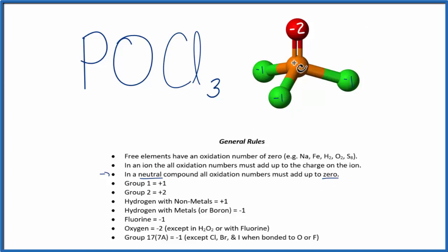So I have a minus two, minus three, minus four, minus five. So a minus five plus some number, and that number is the oxidation number on the phosphorus, that'll equal zero.